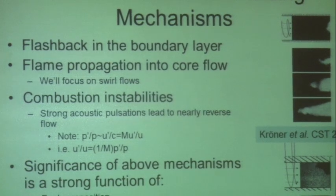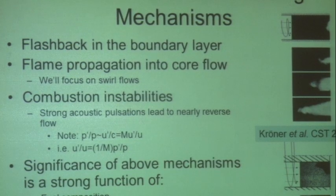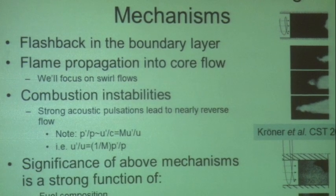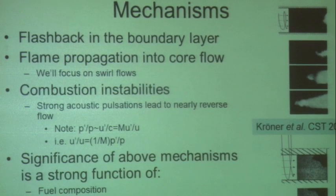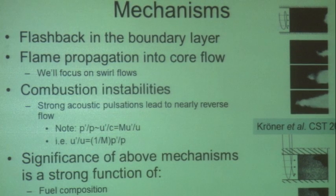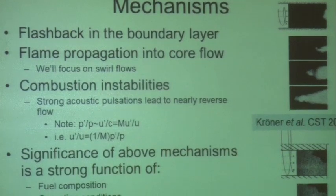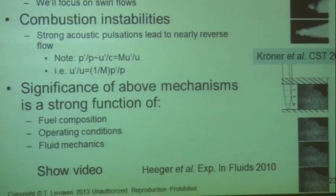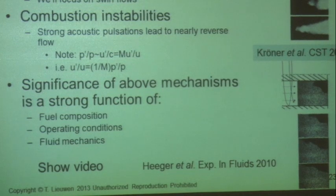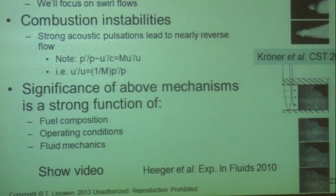Another flashback mechanism — which I won't cover in detail — occurs with very strong acoustic combustion instabilities. Large amplitude oscillations cause the whole flow field to oscillate, and when the amplitude gets big enough, you can get low or even reverse flow, sucking the flame upstream. In practice, a large amplitude combustion instability can cause a severe flashback event where metal starts melting very quickly.